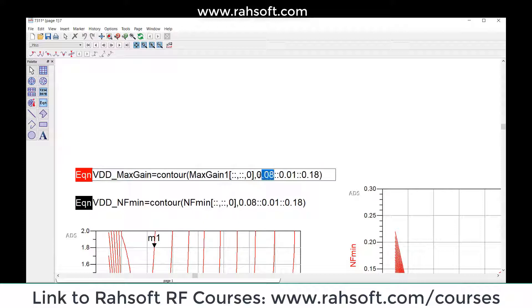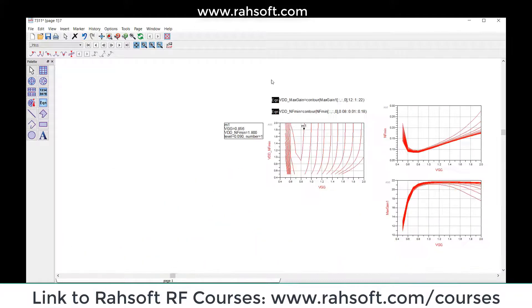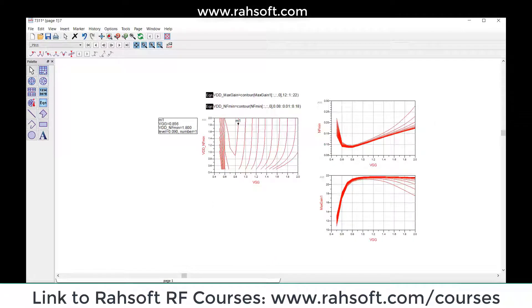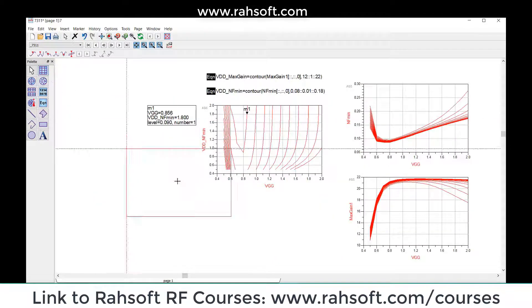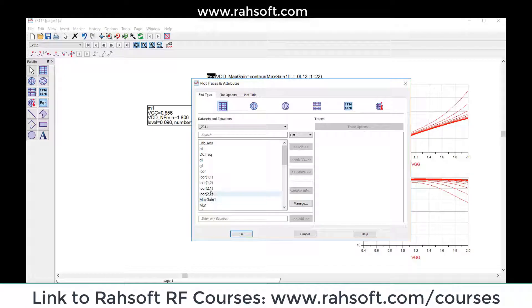12 to 22, maybe with steps of just one should be okay. Now I see it's black, which means your range is correct. So now I'm going to choose this one, go to equations, add, okay.